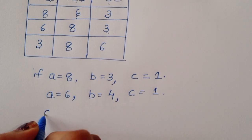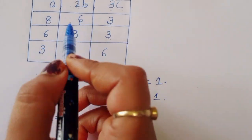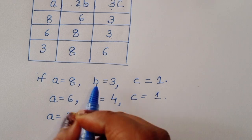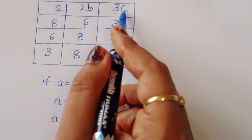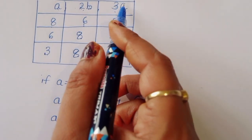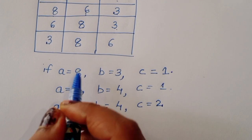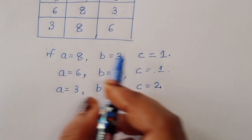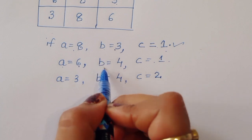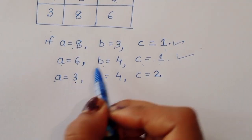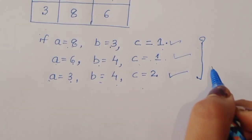So the three solutions are: if A equals 8, then B equals 3 and C equals 1; if A equals 6, then B equals 4 and C equals 1; if A equals 3, then B equals 4 and C equals 2. These are the three solutions. Thank you.